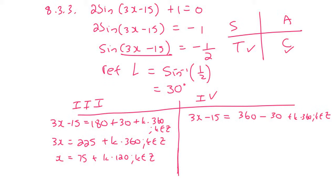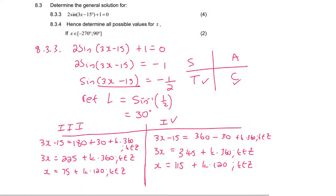And then for the one on the right-hand side, we take it over, and that'll give us 345 plus k times 360, k is an element of z. And that's going to eventually give us x equals to 115 plus k times 120, k is an element of z.